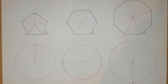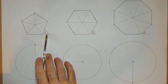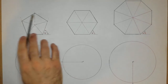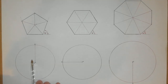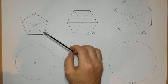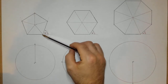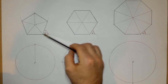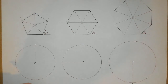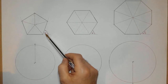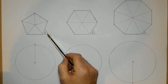Starting with the pentagon - we learned that the exterior angle of a pentagon is 72 degrees. It came from 360, which is the degrees in a circle, divided by the number of sides, which is 5 for a pentagon. 360 divided by 5 gives us our exterior angle, which is 72.